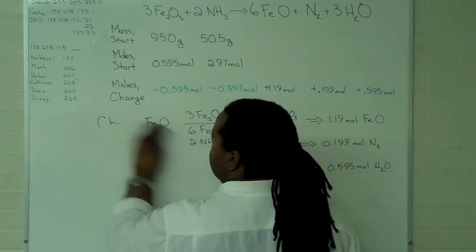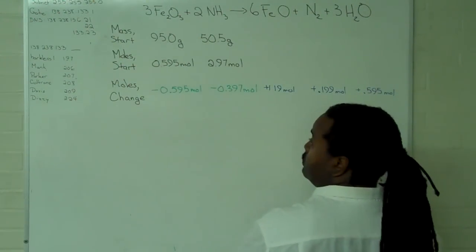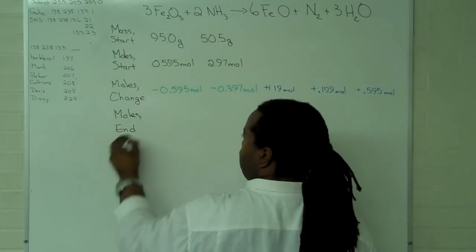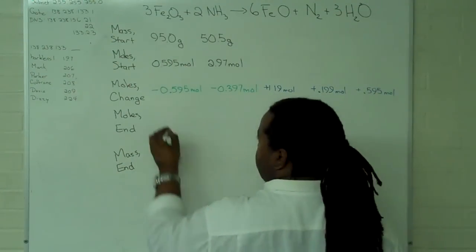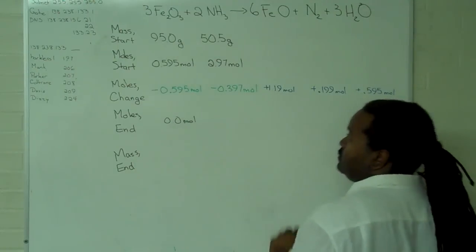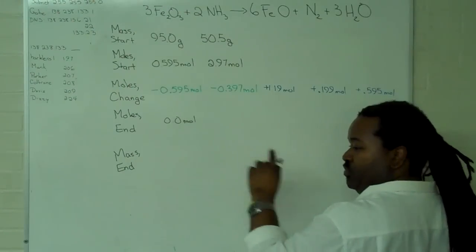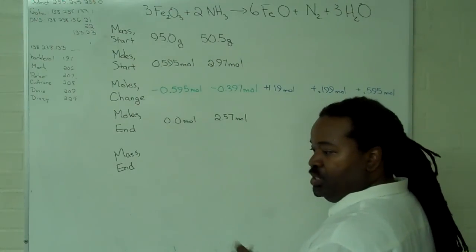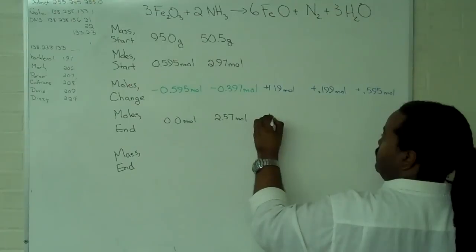To determine the moles at the end, and finally the mass at the end. The number of moles I have at the end, I have none left of our limiting reagent. I have to subtract, and that will leave me rounding off a bit with 2.57 moles. We generated this from having nothing, so these are all very straightforward.